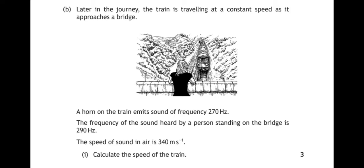Okay, so this is a Doppler effect question. Doppler effect is the perceived difference in frequency because of the source moving relative to the observer. In this case, the train is giving out a sound of frequency 270 hertz, but the person standing on the bridge is hearing that sound at a higher frequency of 290 hertz.